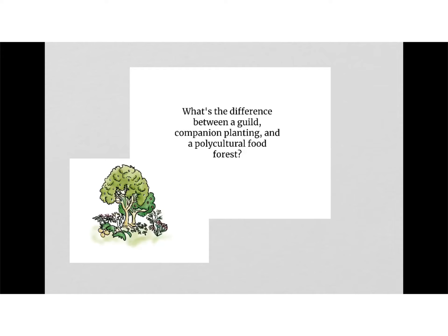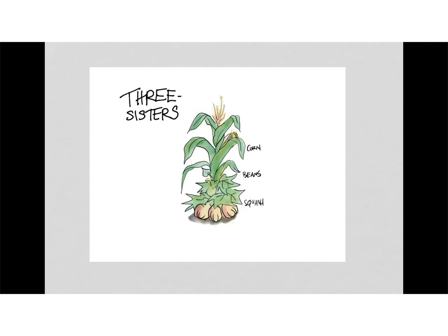What's the difference between a Guild, companion planting, and a polycultural food forest? Here is a Guild. The Three Sisters is a classic Guild: corn, beans, and squash. There are your three annual plants that support each other while they're growing. The corn grows straight up and creates a support system for the beans. The beans fix nitrogen for the corn and the squash, and the squash provides a ground cover to sprawl out underneath the corn.